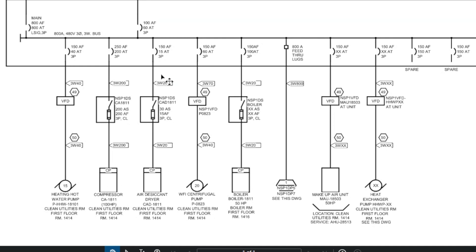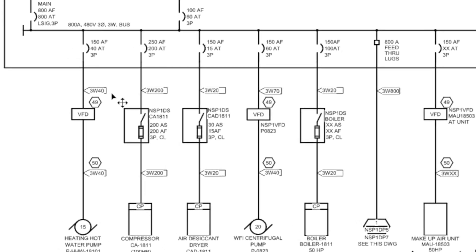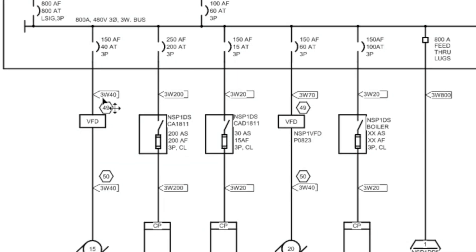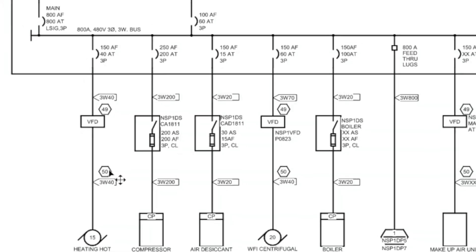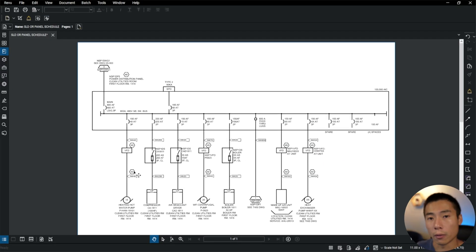You can see that we can specify exactly what type of cable goes on each side of the VFD. Right here it's a 40-amp cable with 600-volt conductors. Then after the VFD, we want to specify a VFD-type cable. That information can be easily illustrated on a single line diagram. If you wanted to do that on a panel schedule, it would be a lot more difficult.